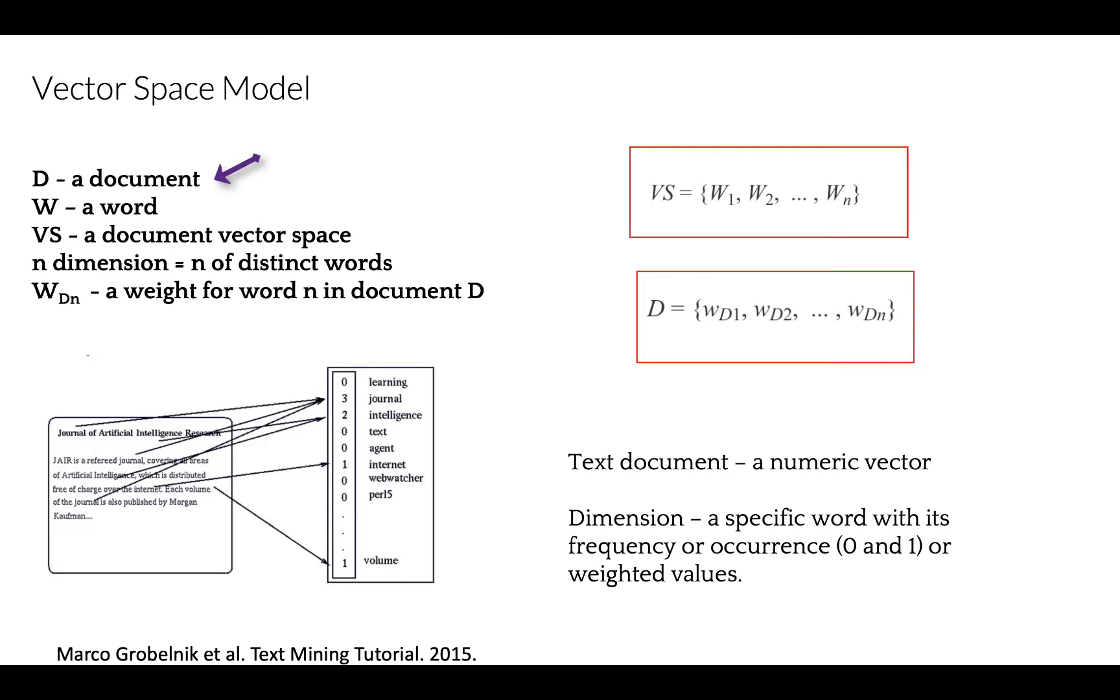Consider we have a document D in a document vector space VS. The number of dimensions or columns for each document will be the total number of distinct terms or words for all documents in the vector space. So we have N distinct words across all documents, which can represent document D, and WDN is a weight for a word, which is a numeric value, for example, a frequency of occurrence.